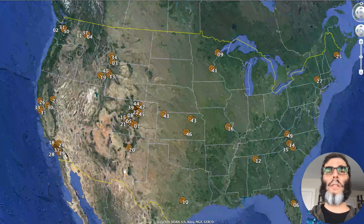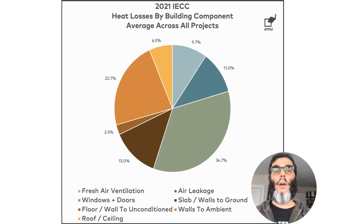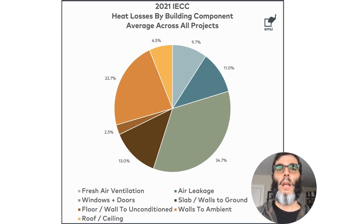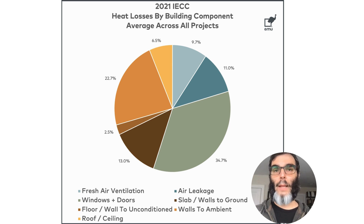These are the 50 projects that we analyzed in our report, and this is where we found the breakdown of the heat losses. If you look at this chart, the number one cause of heat loss in homes is through the windows. Second is exterior walls. Third is heat losses through the ground to the outside air. And only in fourth place is actual air leakage, which is getting a lot of press these days on the internet.